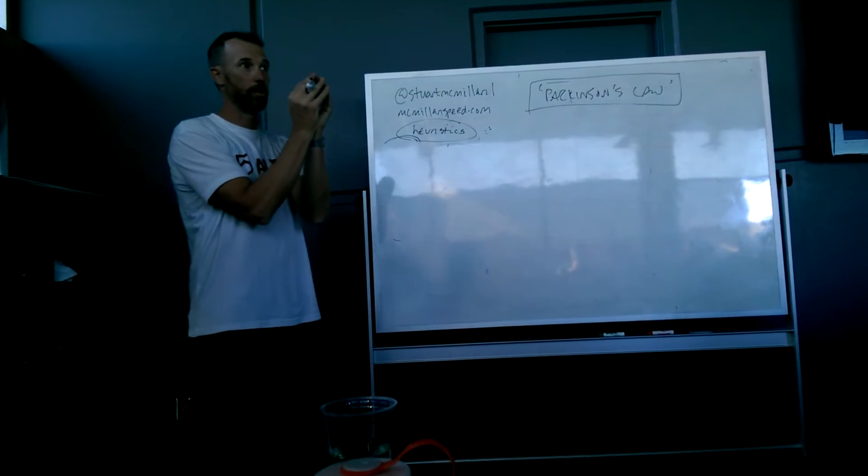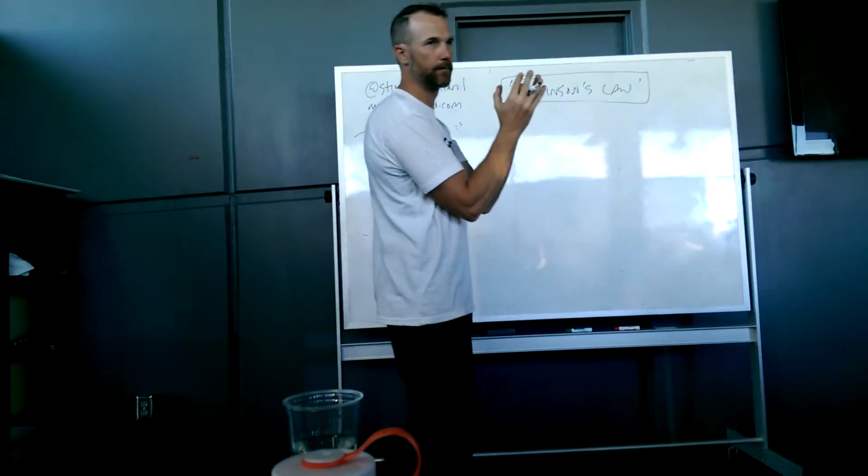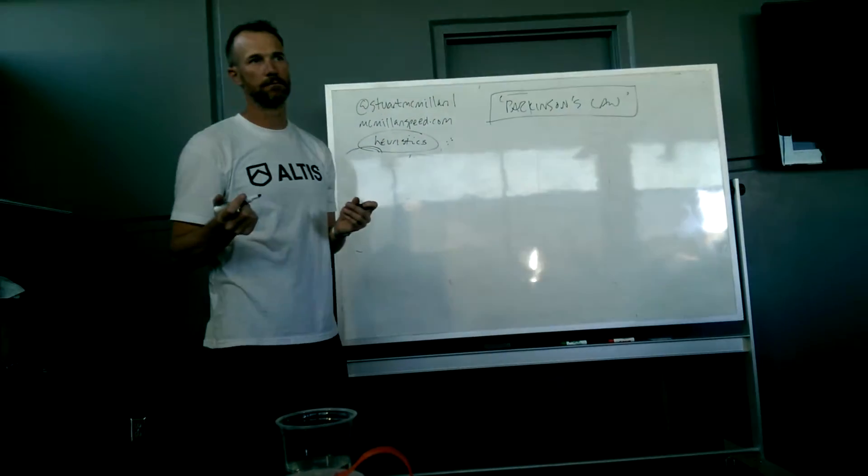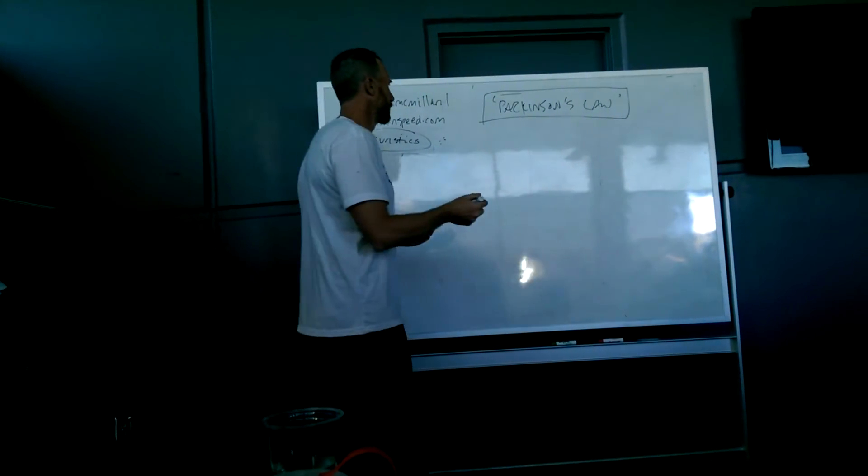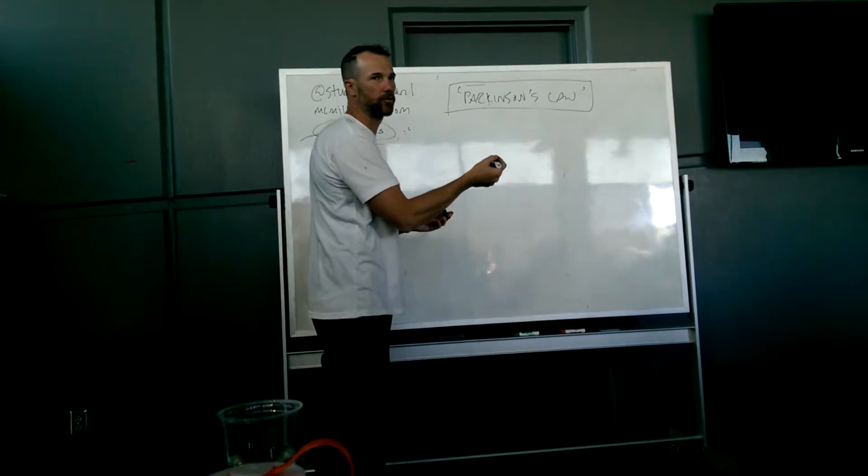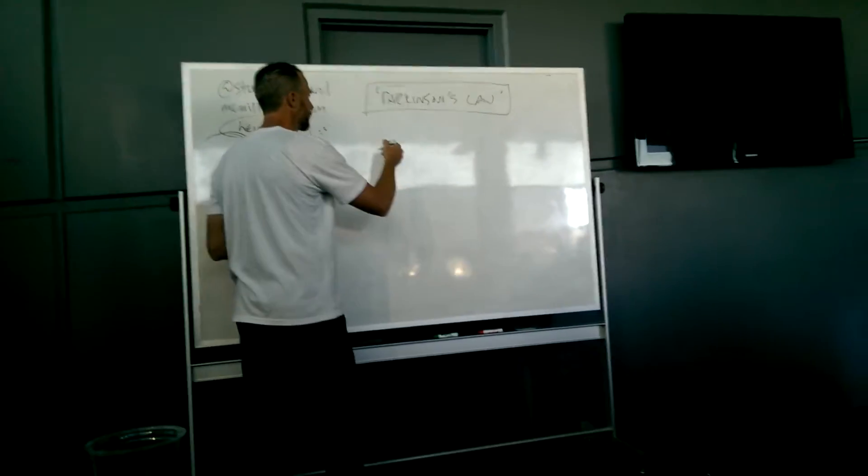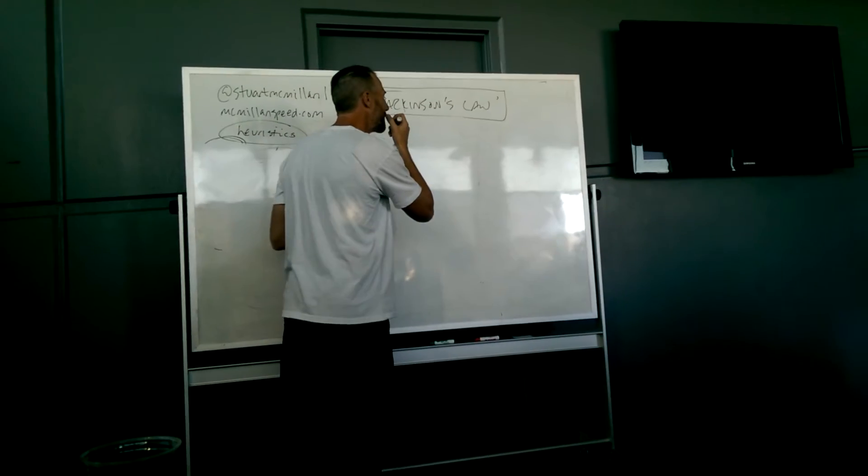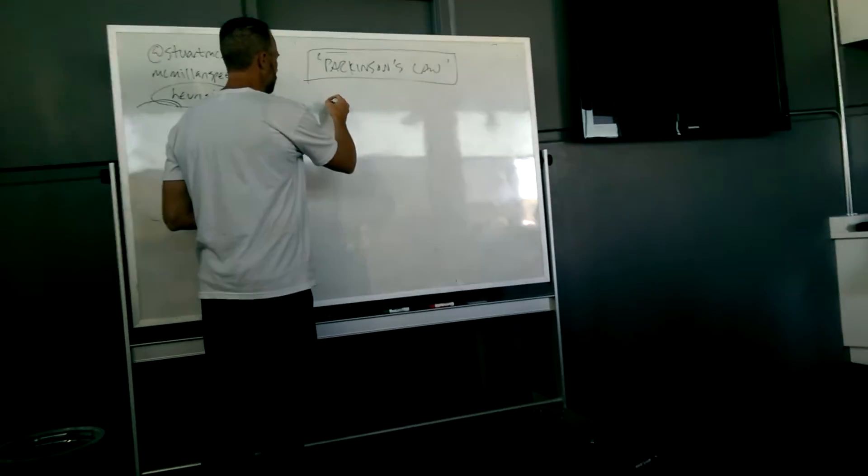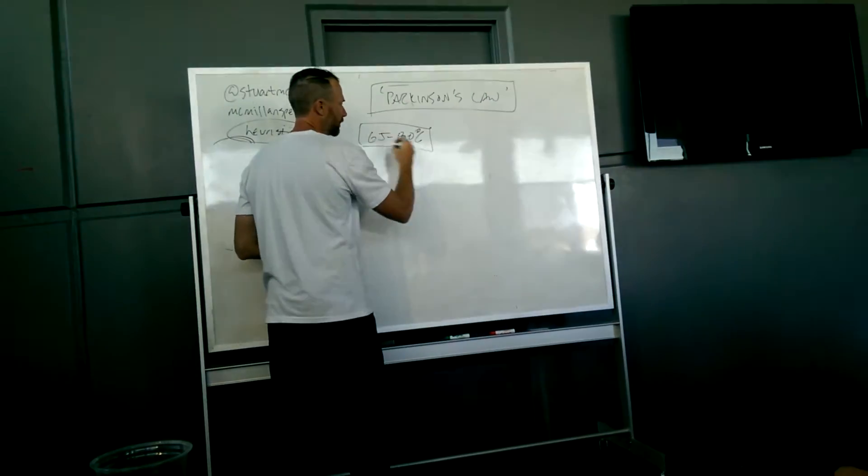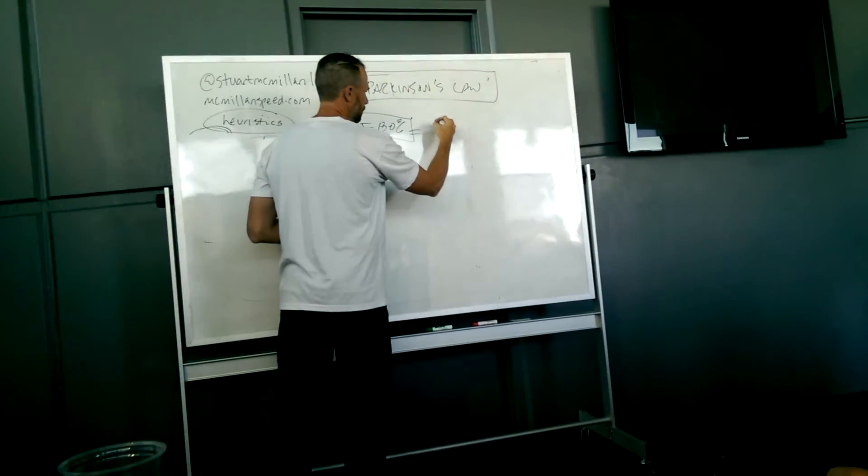How can we apply that in the weight room? Typical zone 2 work would be work capacity, hypertrophy. Give me your loading parameters for that. 60 to 80%, 65 to 80%. Anybody have loading rounds after that? We've got over 85%.